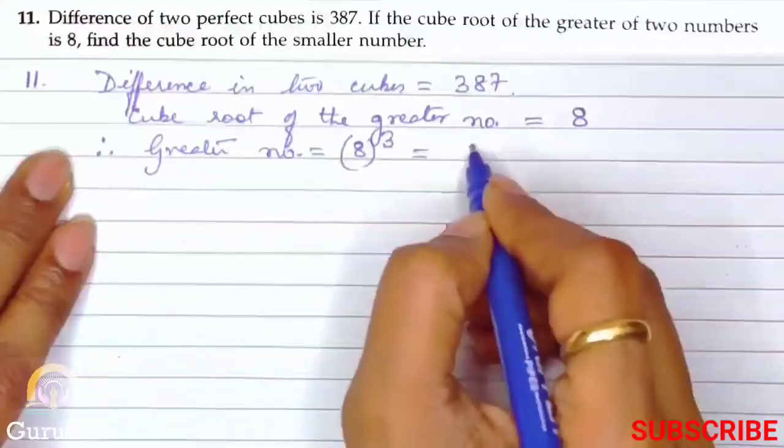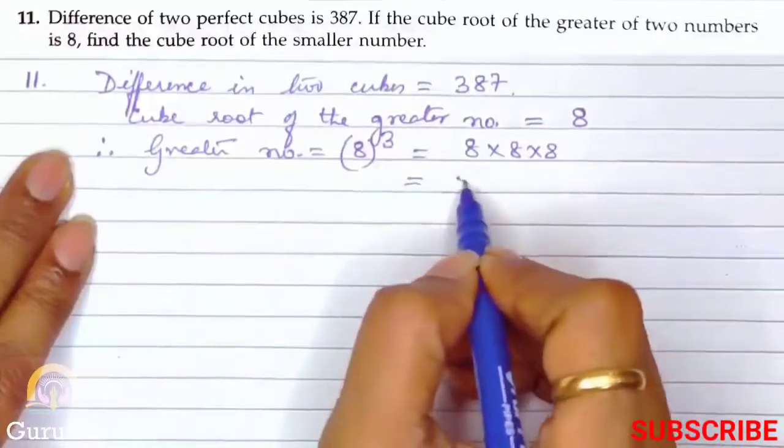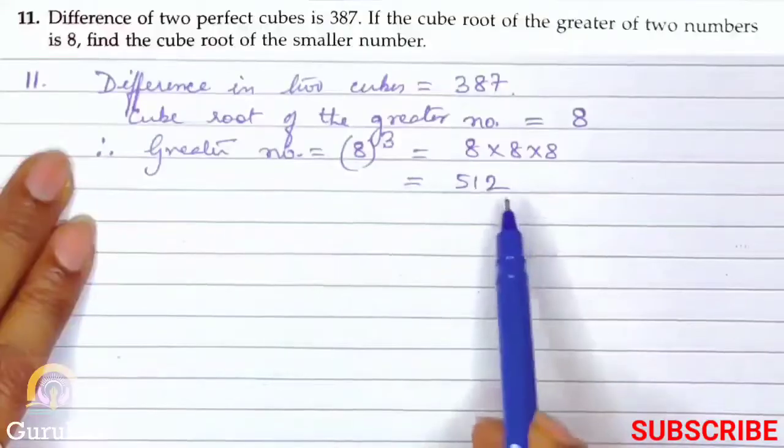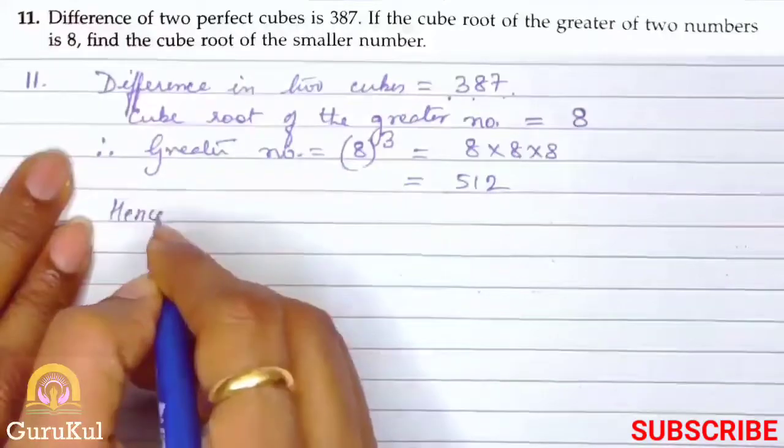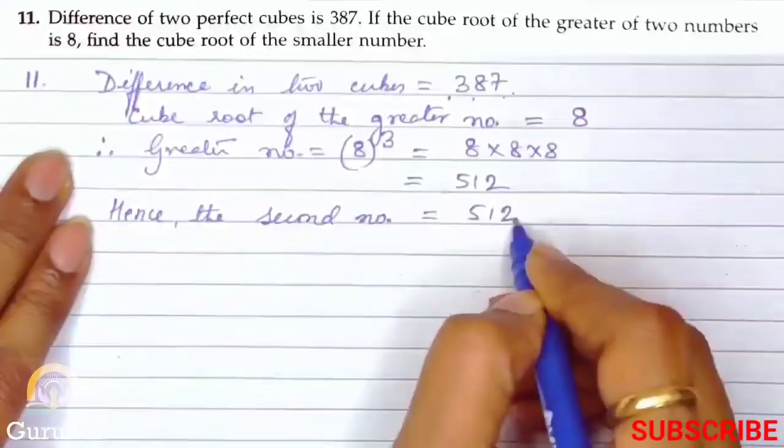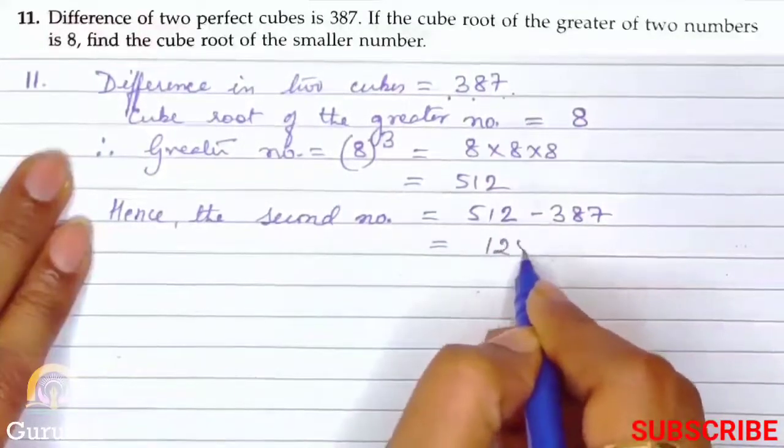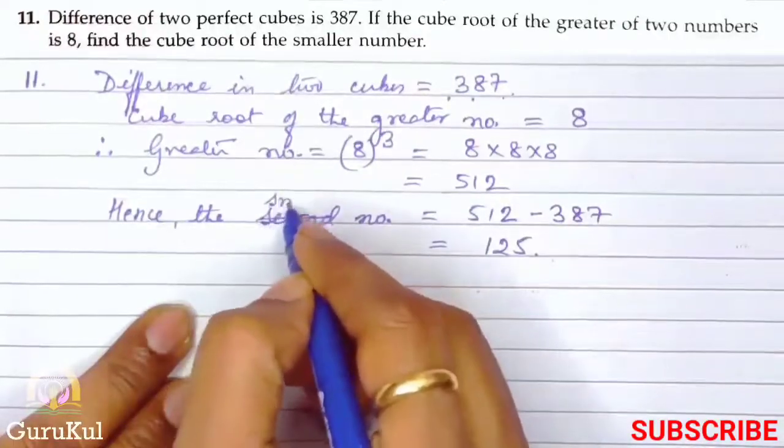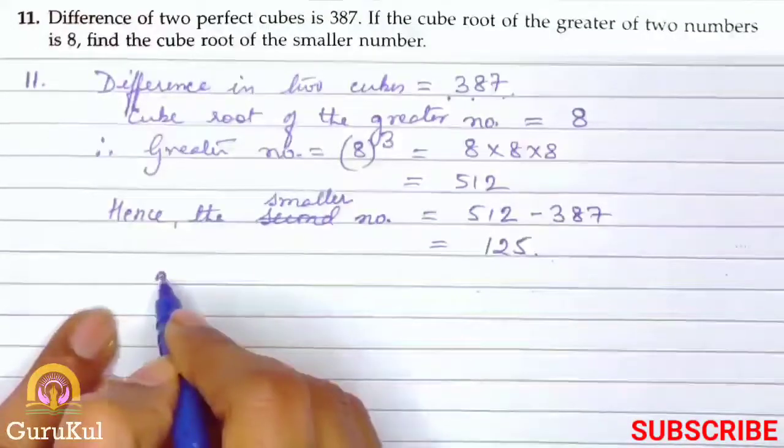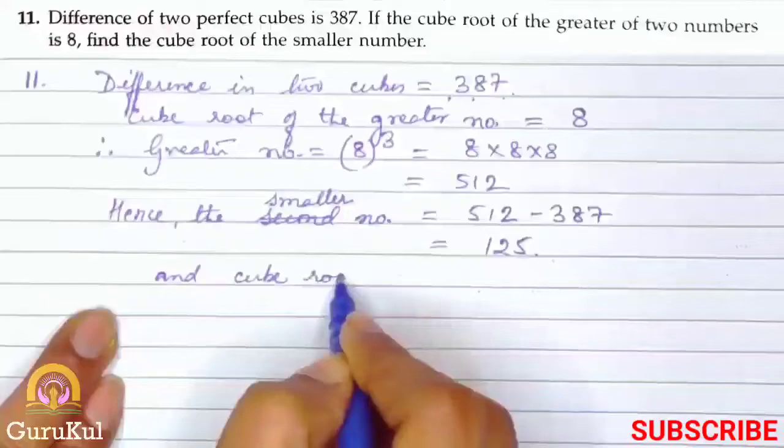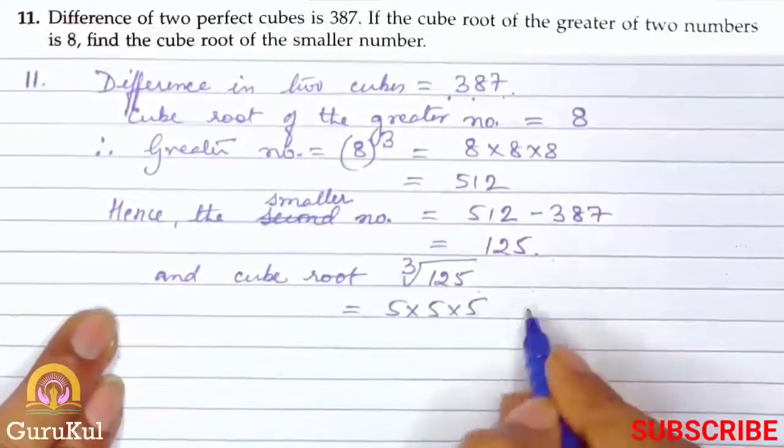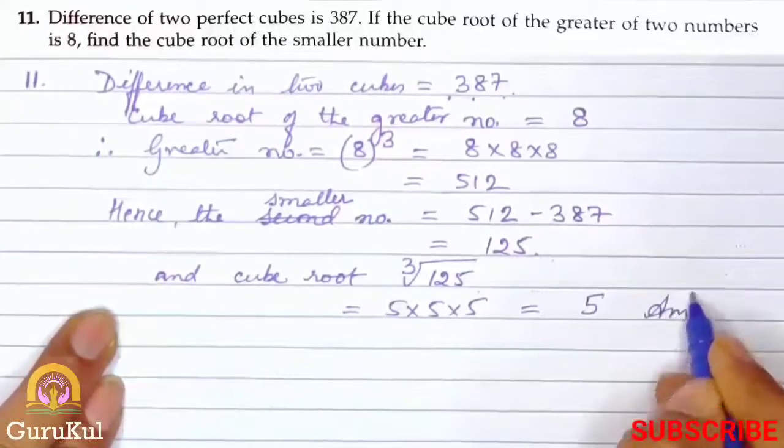Therefore, the greater number equals 8³, which is 8 × 8 × 8 equals 512. So we got the value of the greater number. Both cubes' difference is 387, hence the smaller number equals 512 - 387, which gives us 125. The cube root of 125 is 5 × 5 × 5, which equals 5. This is the answer.